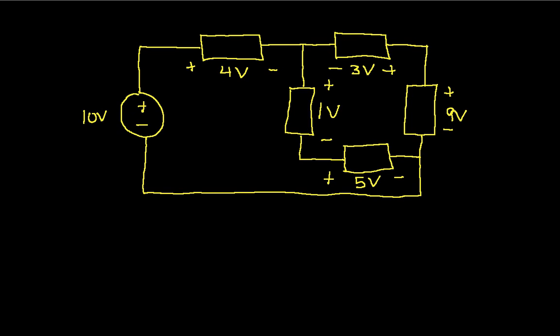So to give you a more concrete idea of what that is, I've drawn some circuit here. It has a 10-volt source, components with 4 volts across them, 3 volts across them, 1 volt, 9 volts, and 5 volts across them.